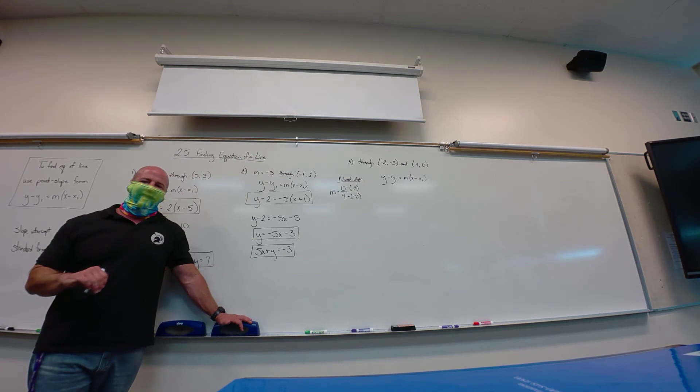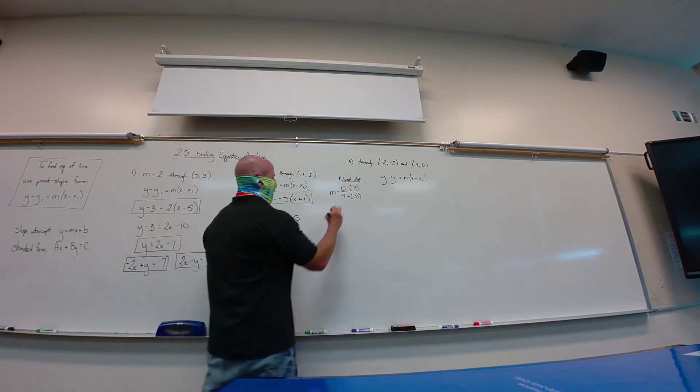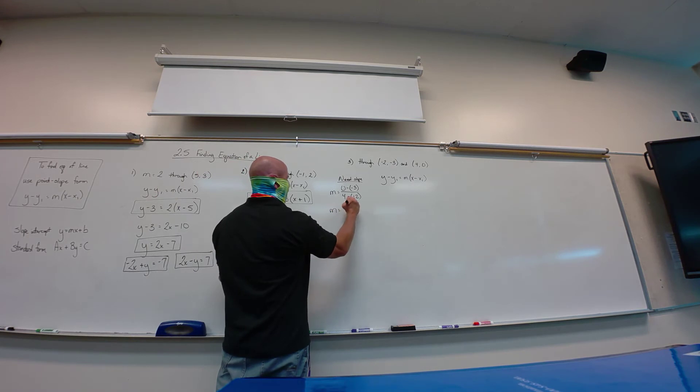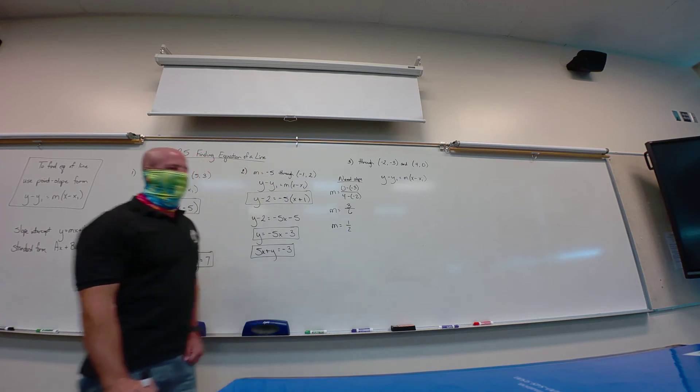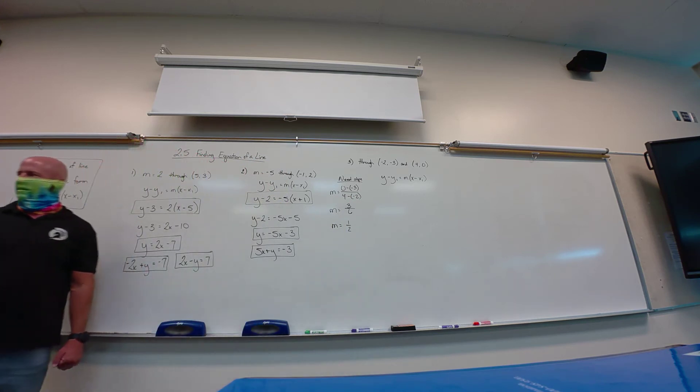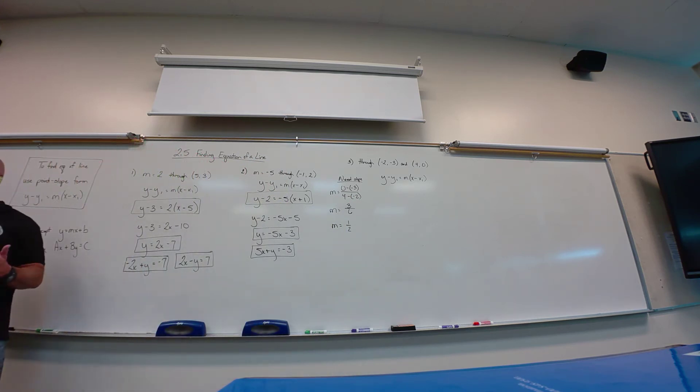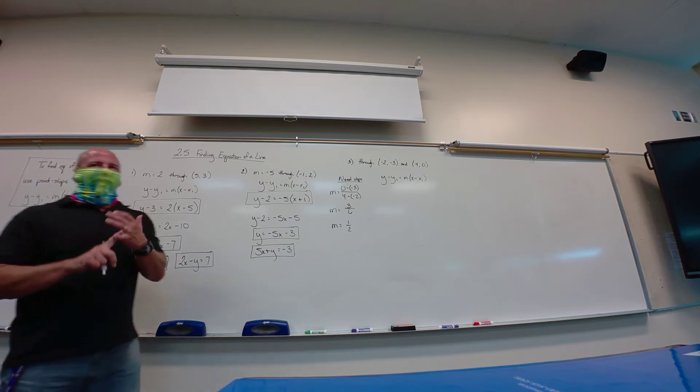Need slope. So, I'm going to say 0 minus negative 3 over 4 minus negative 2. So, I did that change in y over change in x. That's not new to us. We're just having to bring something in that we did before. Let's see. So, this would give me then 3, 6, which is 1 half. So there's my slope. Alright. So, to use my point-slope form, I need a point and a slope.